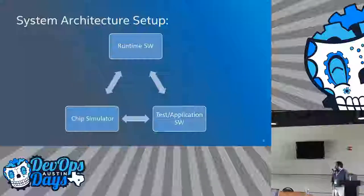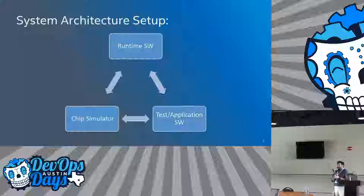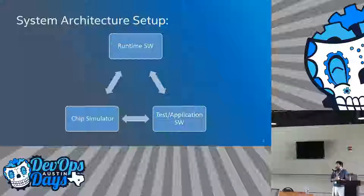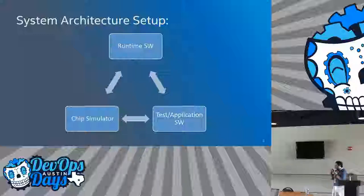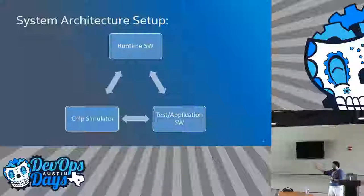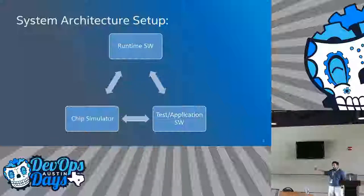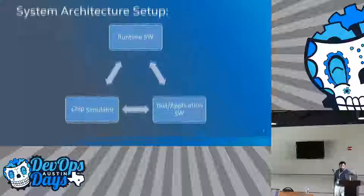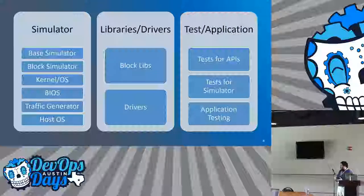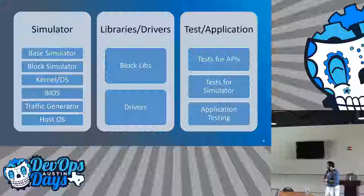What happens is when you have a single piece of software it's a fairly solved problem — one or two repositories depending on each other. But when you have three major teams doing simulation development, runtime software development, and test and application development with system testing teams, it gets a bit more difficult.